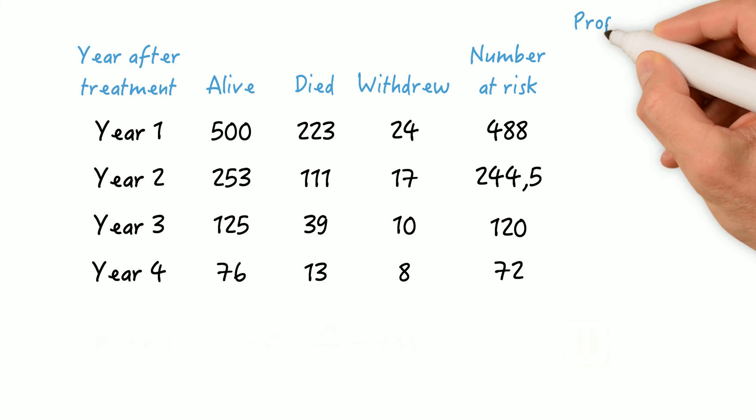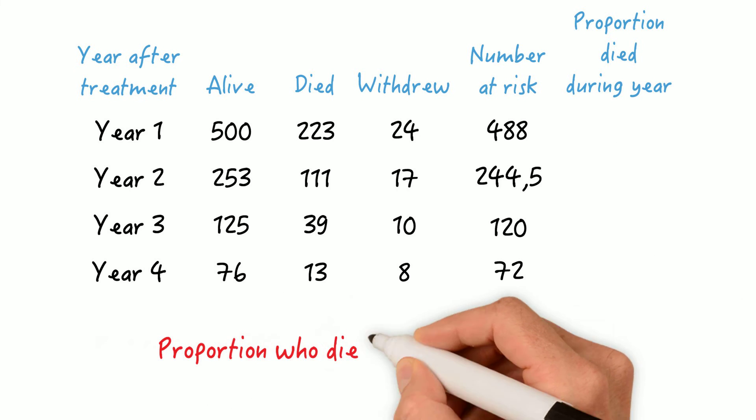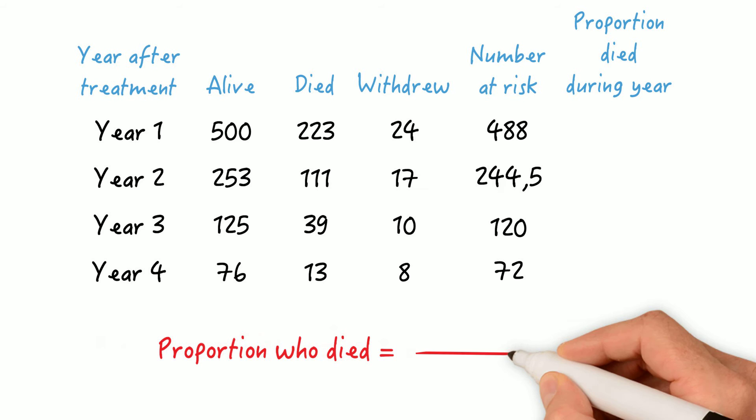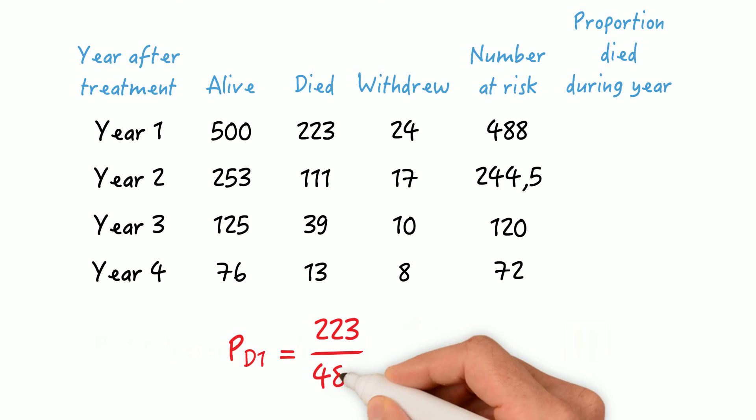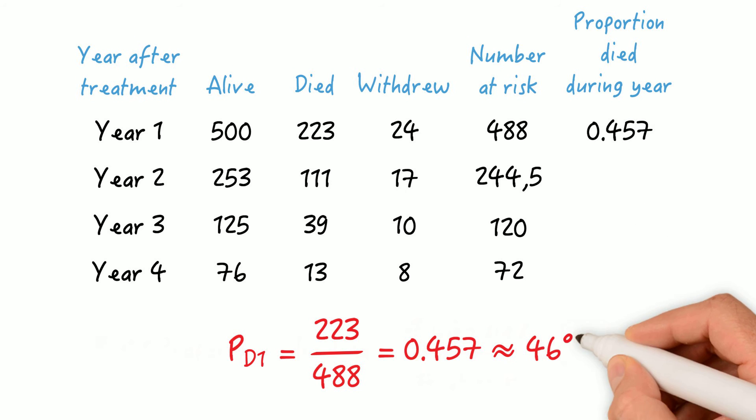Now, let's calculate the proportions of people who died during each year. We said the proportion of people who died is calculated by dividing the number of people who died by the number of people at risk in that year. So for year 1, that would be 223 divided by 488, and that's 0.457, or 46%.